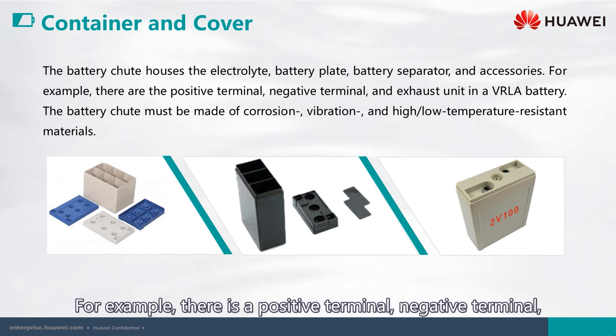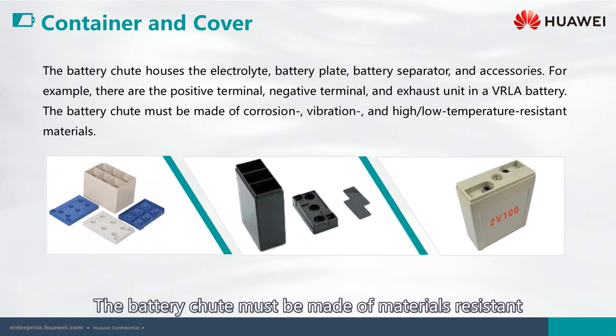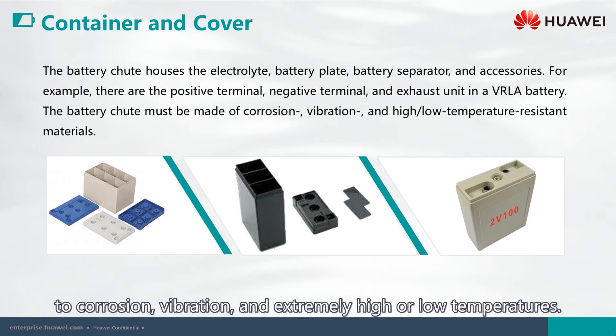For example, there is a positive terminal, negative terminal, and exhaust unit in a VRLA battery. The battery chute must be made of materials resistant to corrosion, vibration, and extremely high or low temperatures.